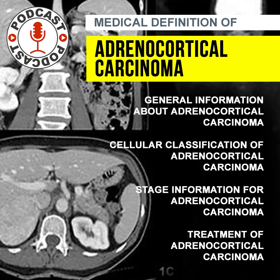The most common sites of metastasis are the lung, liver, peritoneum, and less commonly, the bones and major veins. Palliation of metastatic functioning tumors may be achieved by resection of both the primary tumor and metastatic lesions.